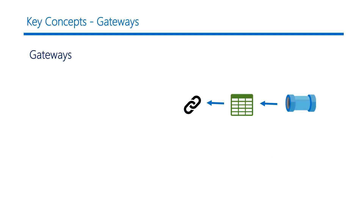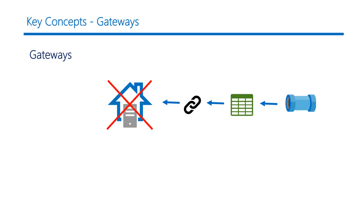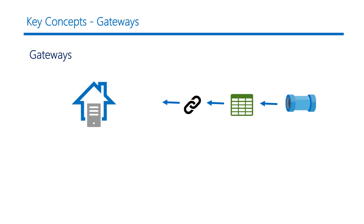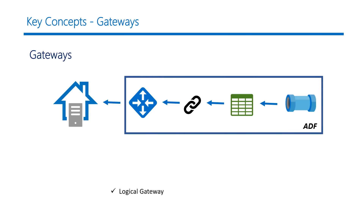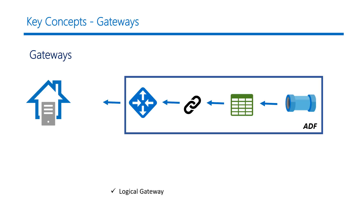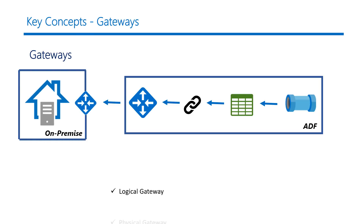If you are fetching data from an on-premise data store or an Azure VM, you need to create a linked service to your VM. However, connection details to the VM alone will not work because ADF is a cloud service and cannot directly pull data from a VM. For this reason, you need to create a gateway. There are two gateways: a logical gateway created within ADF that points to the physical gateway installed on your VM, and it is the physical gateway that is responsible for moving your on-premise data.